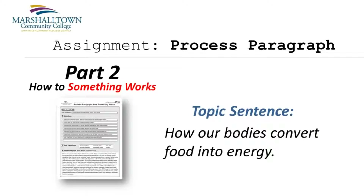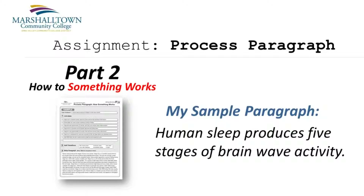You might also use this type of process analysis to explain how our bodies convert food into energy. Notice how the words convert and into imply that the paragraph is likely going to explain a sequence of events. In my sample paragraph, I used a process analysis to explain what happens in our brains while we sleep. Notice how the words five stages certainly indicate that my paragraph will explain a certain sequence of events.